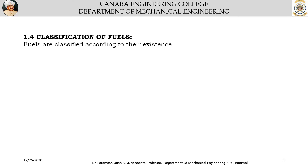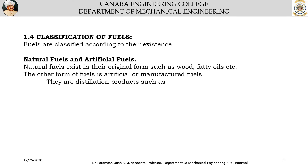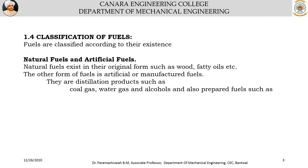Fuels are classified according to their existence — natural fuels and artificial fuels. Natural fuels exist in their original form, such as wood and fatty oils. Artificial or manufactured fuels include distillation products such as coal gas, water gas, and alcohols, as well as intentionally prepared fuels such as coke, benzene, and hydrogen gas.